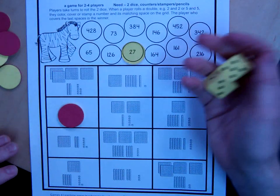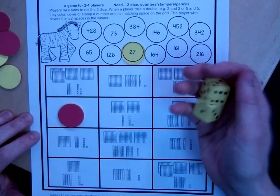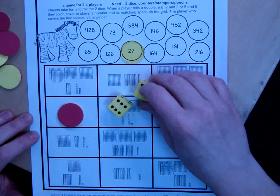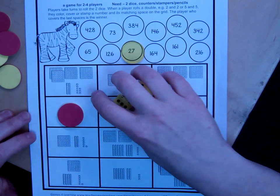And the next player would go. You cannot cover up anything until you roll a double. Pretend like this is the other partner. Uh-oh, they did a 6 and a 3. That's not a double. They have to roll again.